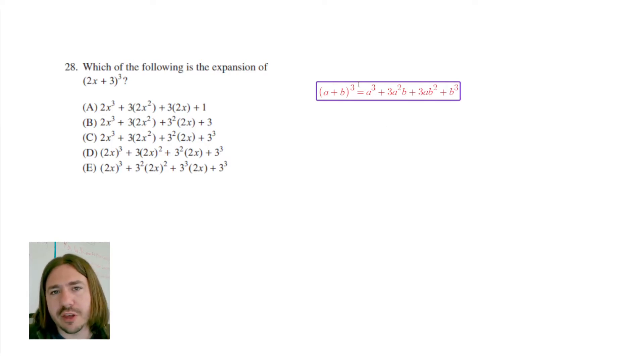Now this is just going to be your general expansion for when you cube a binomial, but in our case, we've got 2x plus 3 that's being cubed. So I'm going to rewrite this as 2x plus 3 cubed. Now notice how this looks very similar.